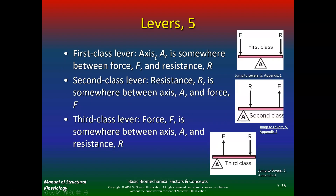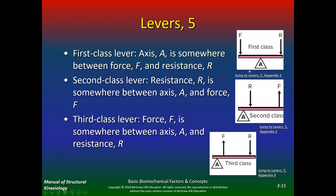For the first class lever, the axis is somewhere between the force and the resistance. For the second class lever, the resistance is somewhere between the axis and the force. For the third class lever, the force is somewhere between the axis and the resistance. The second class lever is the most efficient — if you see that on a quiz question, it's the most efficient, because it reminds you of a wheelbarrow.